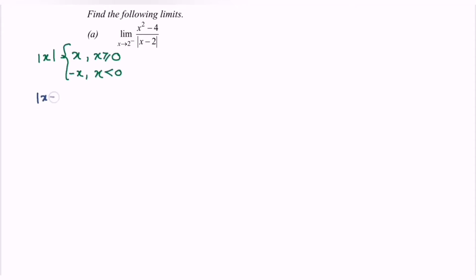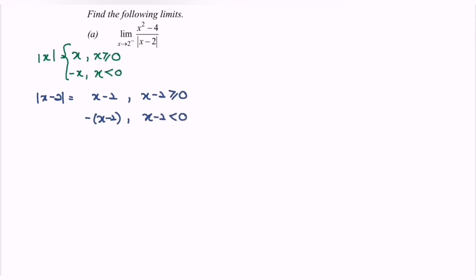For the absolute value of x minus 2, it will be x minus 2 where the domain is x minus 2 greater than or equal to 0, and negative bracket x minus 2 where the domain is x minus 2 less than 0. Simplified, this gives x minus 2 for x greater than or equal to 2, and negative (x minus 2) for x less than 2.